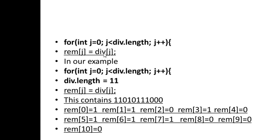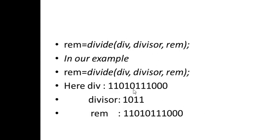All 11 values from the dividend array are copied into the remainder array, so the remainder starts with the same value as the dividend: 1 1 0 1 0 1 1 1 0 0 0. The divisor polynomial is 1 0 1 1, which is the polynomial used for division. Then the divide function is called with these parameters.